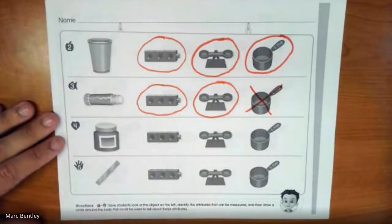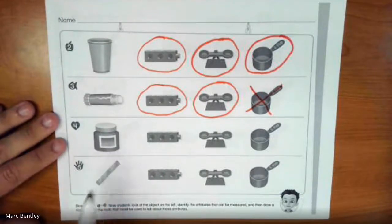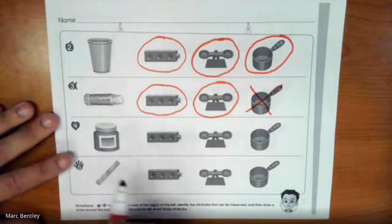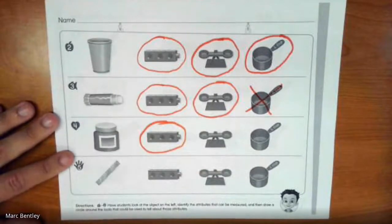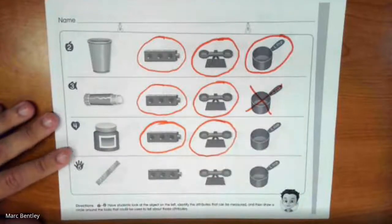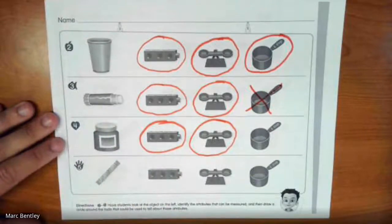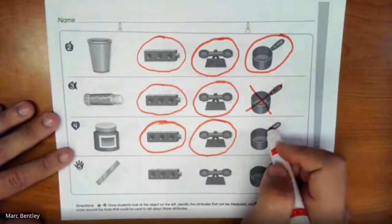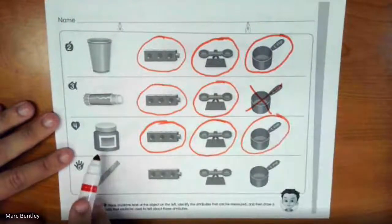Here we have a jar. Could we measure the jar's length? Yeah, we could measure its length or height, so I'm going to circle this one. We could also measure its weight. And because if we take the lid off it should be empty inside, we could also measure the jar's capacity, how much it can hold.